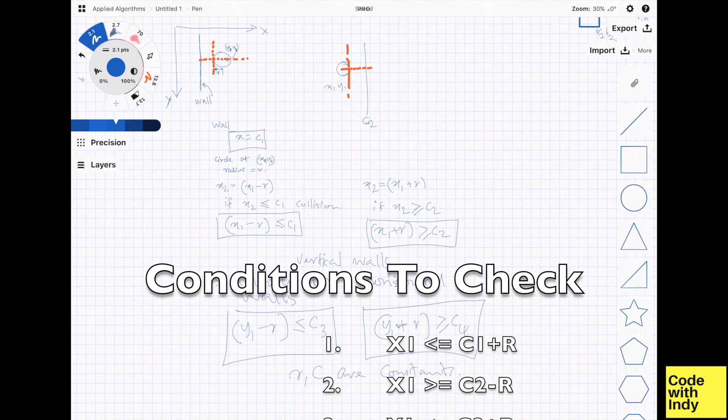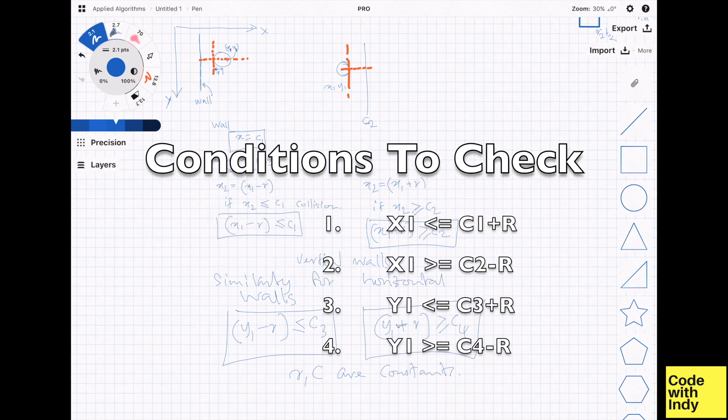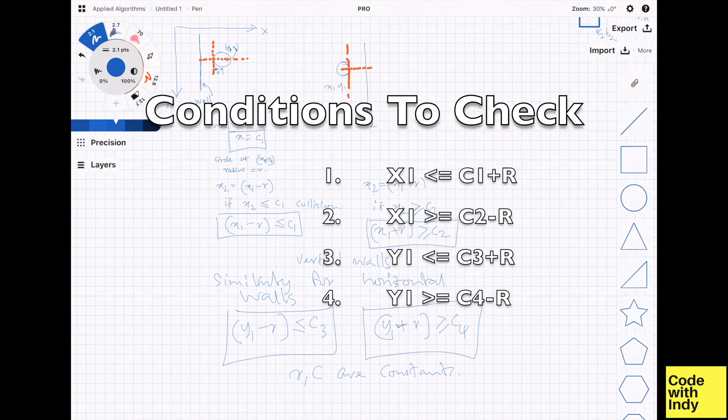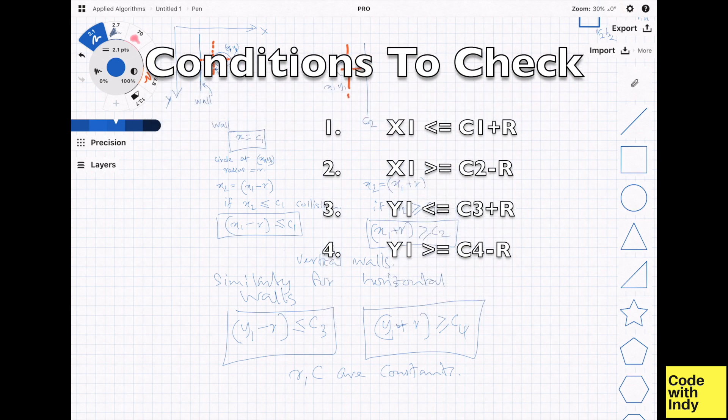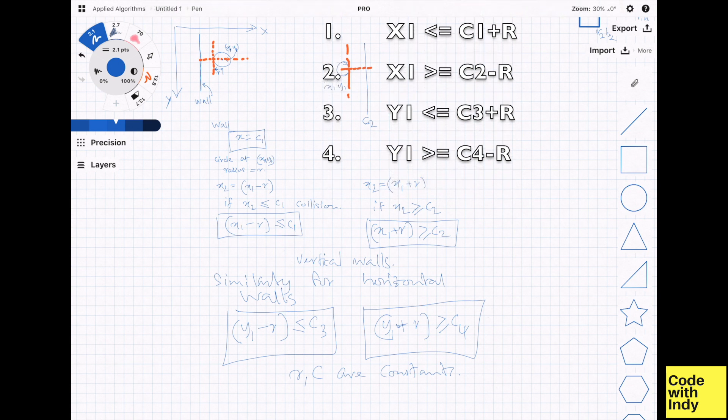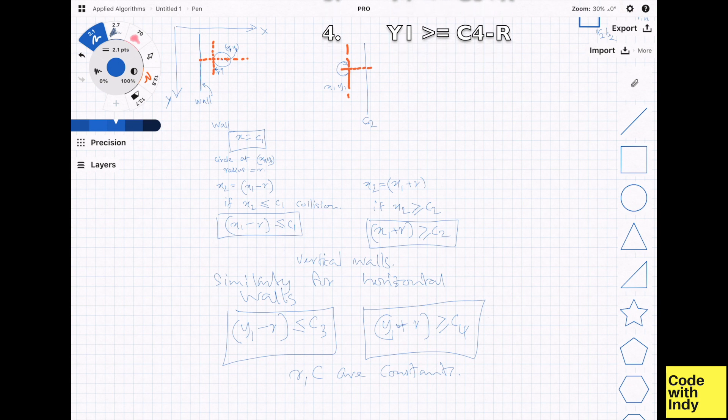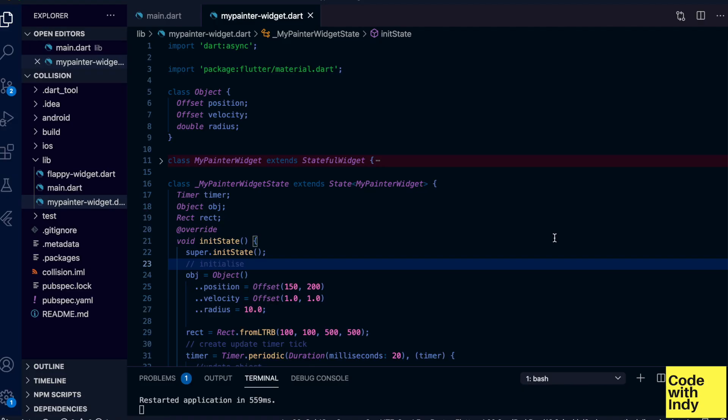x1 less than or equal to c1 plus r. x1 greater than or equal to c2 minus r. y1 less than or equal to c3 plus r. y1 greater than or equal to c4 minus r. So these are the conditions you have to check at each update of the position of the circle, x1, y1. Great, so let's take a look at the code how this is implemented.